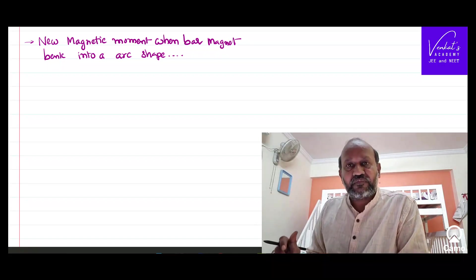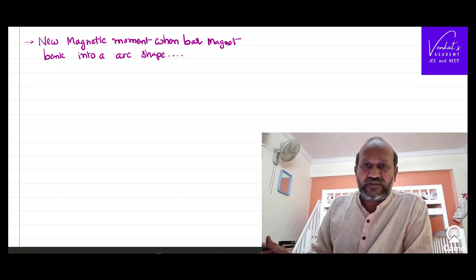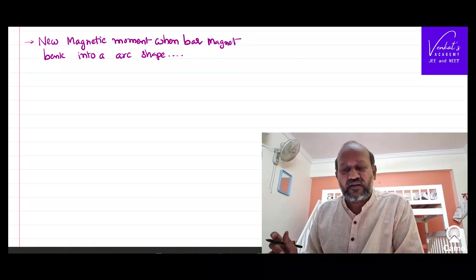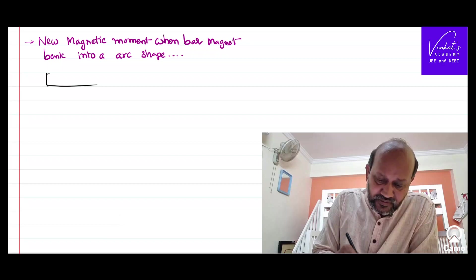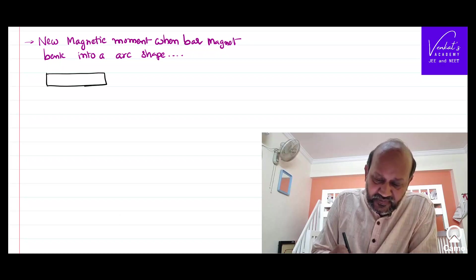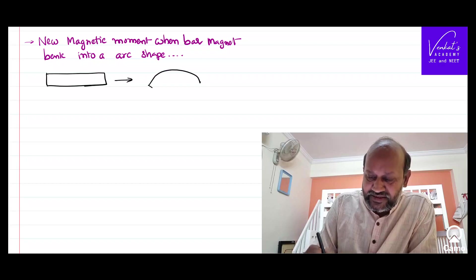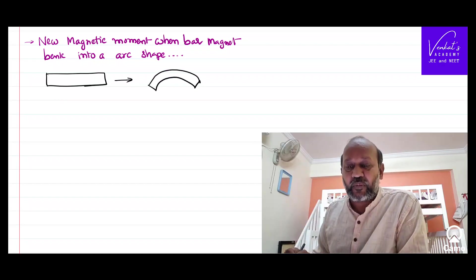Here we are solving a problem that is relevant to magnetic moment. The problem is when a bar magnet is converted into an arc shape like this, what will be its new magnetic moment?